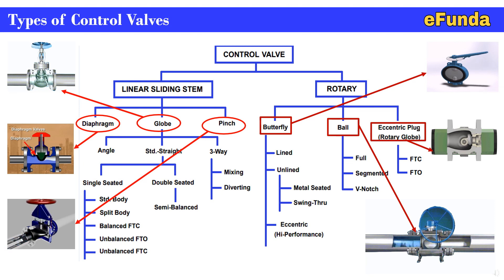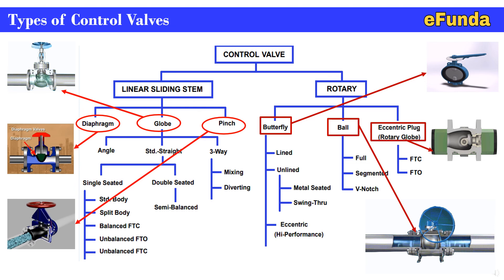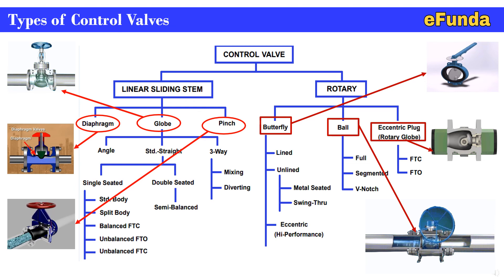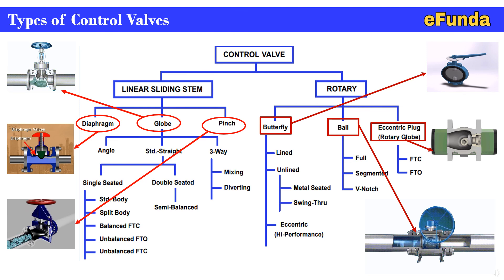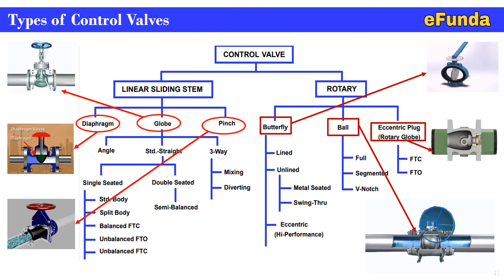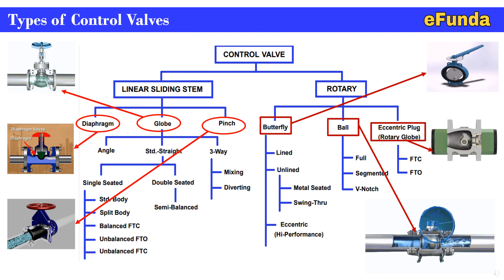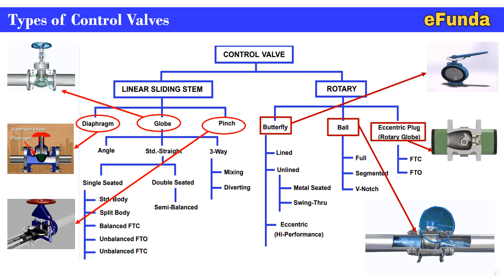This is how control valve types are categorically divided. We have touched on each type of valve. For further classification of each type, one can study the classification table to understand valve types — single-seated, double-seated, or three-way mixing in a linear sliding stem type. Rotary valves are also classified and listed in the table for ready reference.